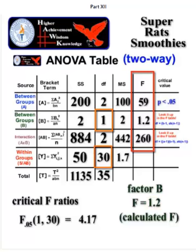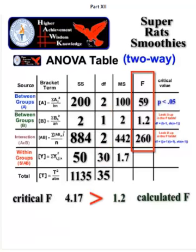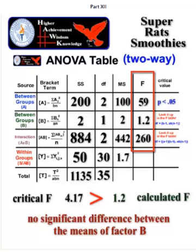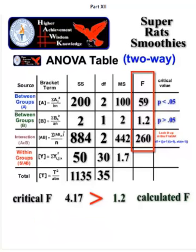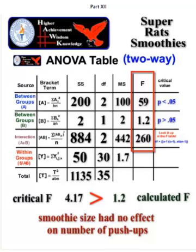Our calculated F was only 1.2. Therefore it's saying that there was no significant difference between the groups. And what that means in our experiment terms is that the smoothie size really did not have an effect on the number of push-ups these little rat guys were doing.